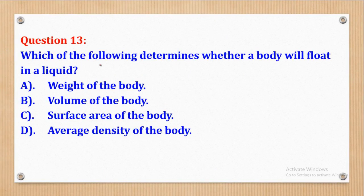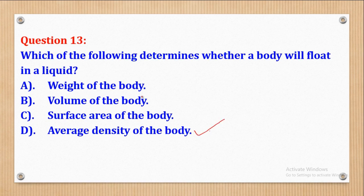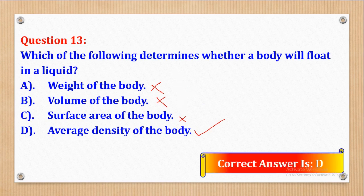Question 13: which of the following determines whether a body will float in a liquid? Part A: weight of the body. Part B: volume of the body. Part C: surface area of the body. Part D: average density of the body. We eliminate the others and take average density of the body as the determining factor. The correct answer is part D.